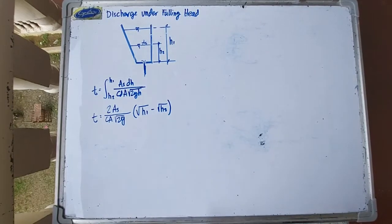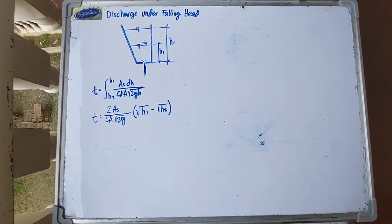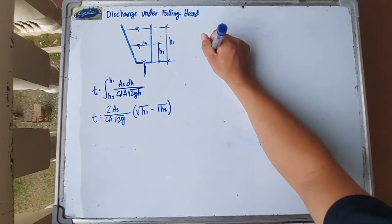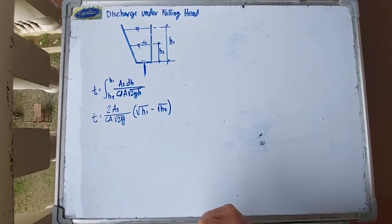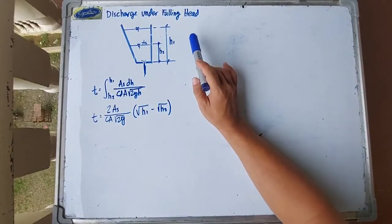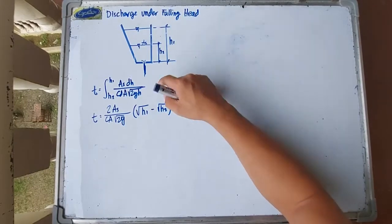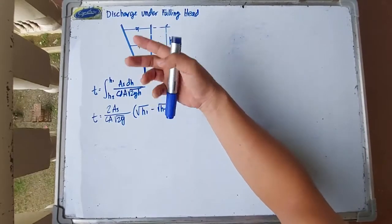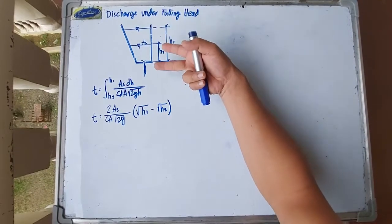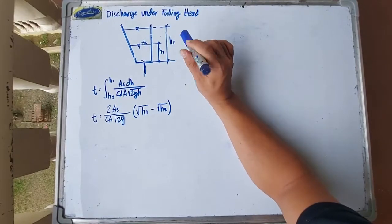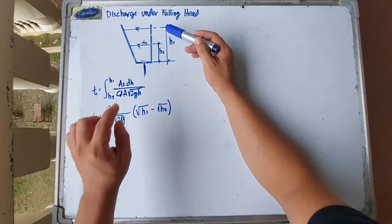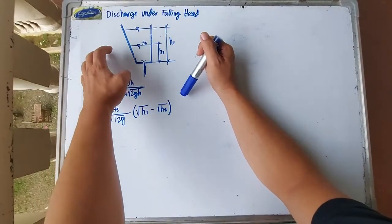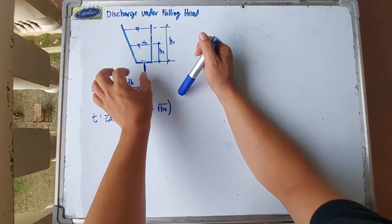This should be the last topic for this chapter: discharge under falling head or variable head. This is the opposite of constant head, which we discussed before. In constant head, the head or height above the orifice is constant. In this case, the head is variable — meaning the height of water above the opening goes down as it is being released.